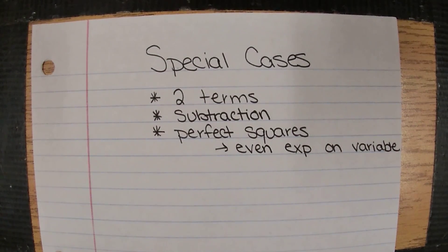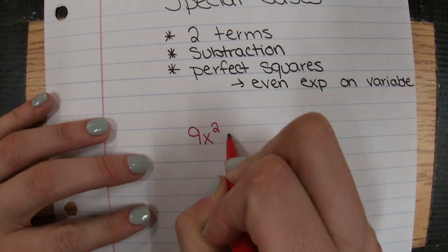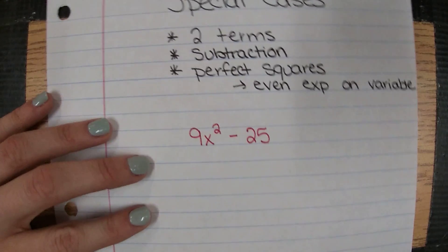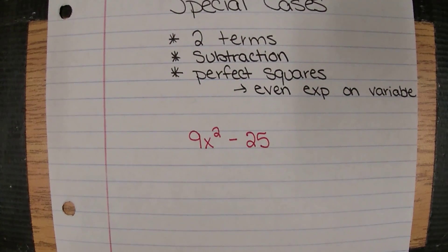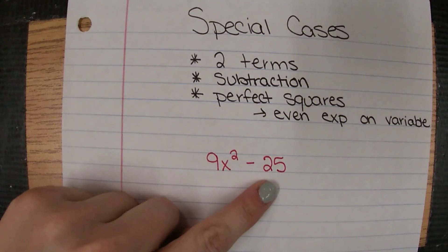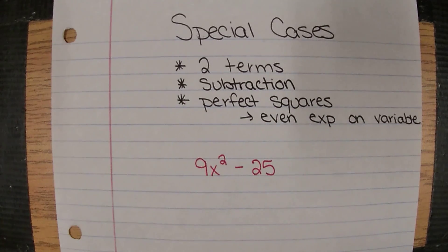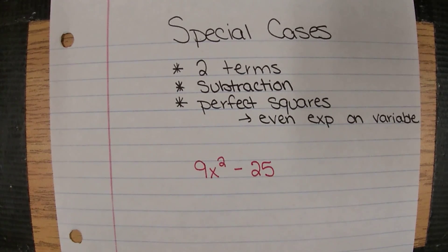We actually talked about multiplying special cases, so now we're just doing that in reverse, factoring special cases. Let's say we have 9x squared minus 25. The first thing we want to do is check and make sure it fits this format. So it is two terms, it is subtraction, and now we want to check and see if they're perfect squares.